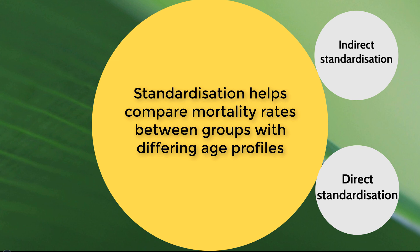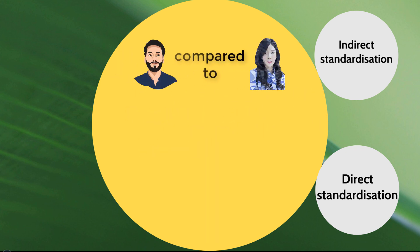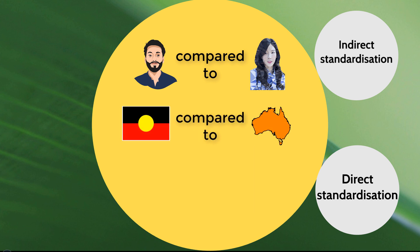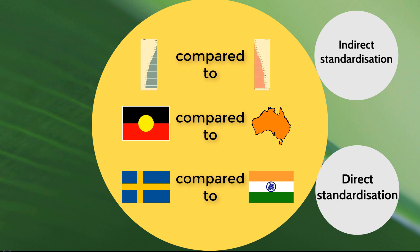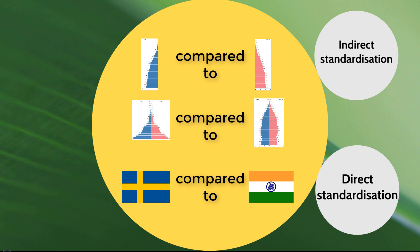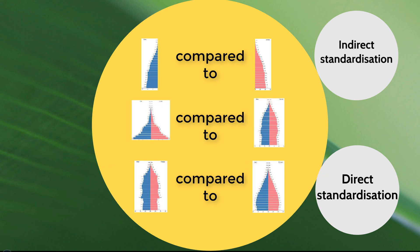This is really the reason why we need to standardize. When comparing two populations, they're likely to have a different age profile — whether comparing male versus female mortality rates, indigenous cultures versus the general population, or country to country. It's critical to adjust for these differing age distributions; otherwise, our comparisons of mortality rates between groups are genuinely biased.